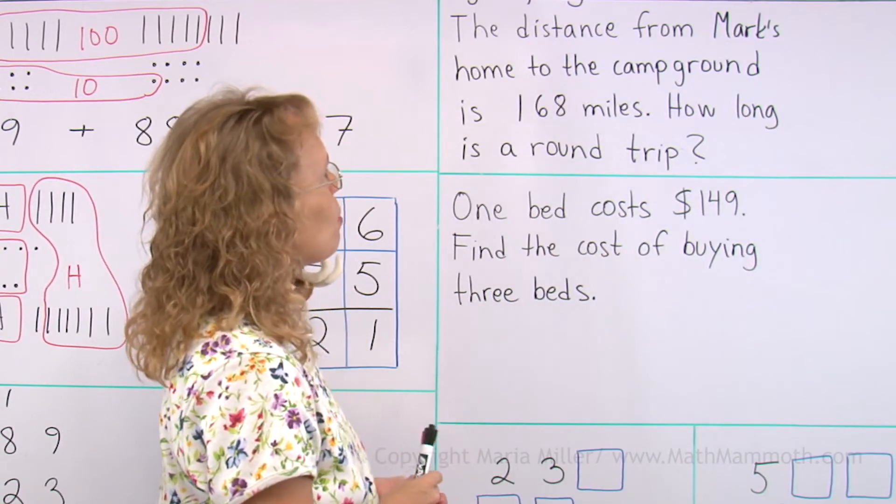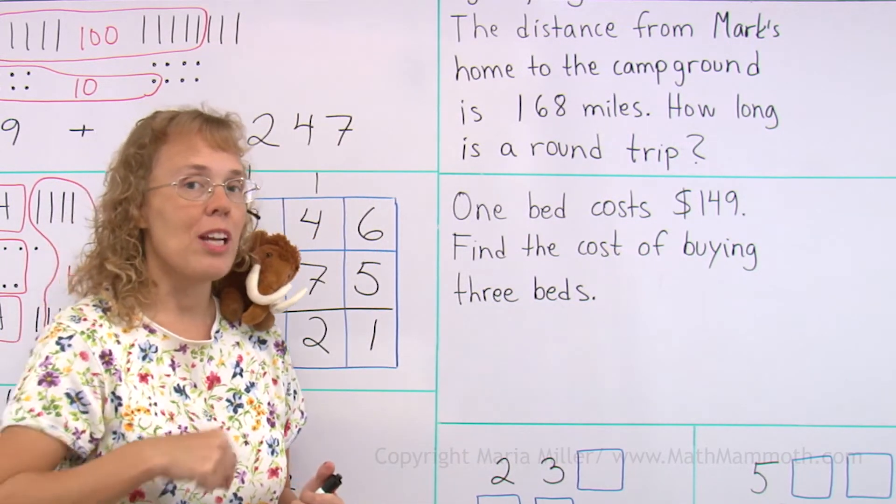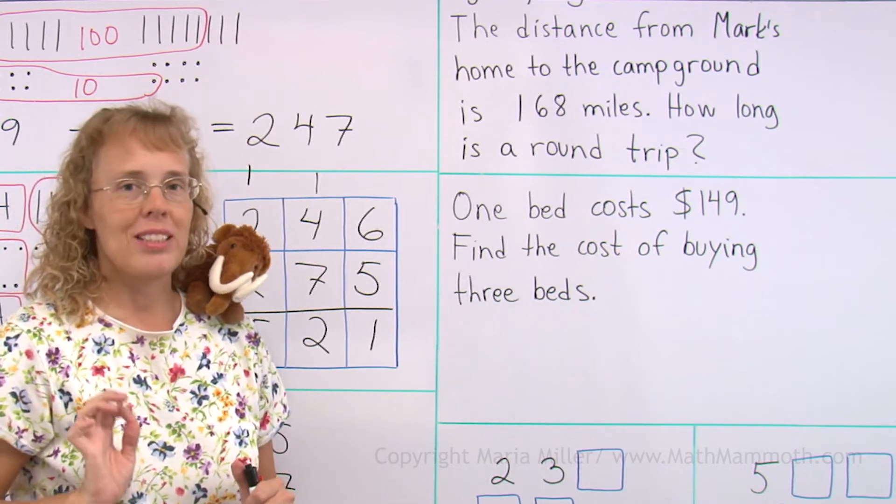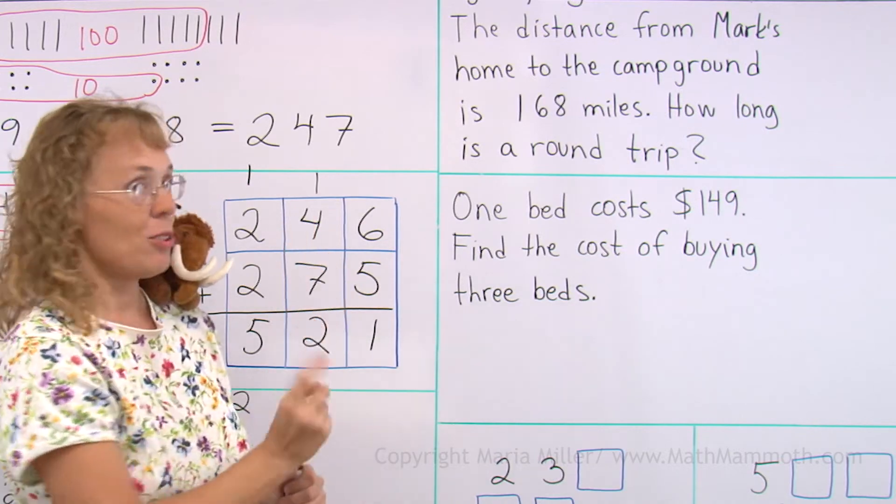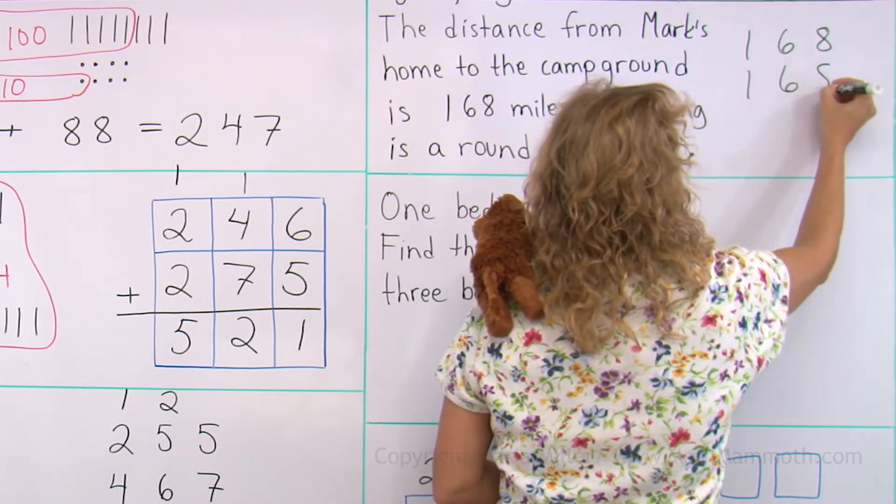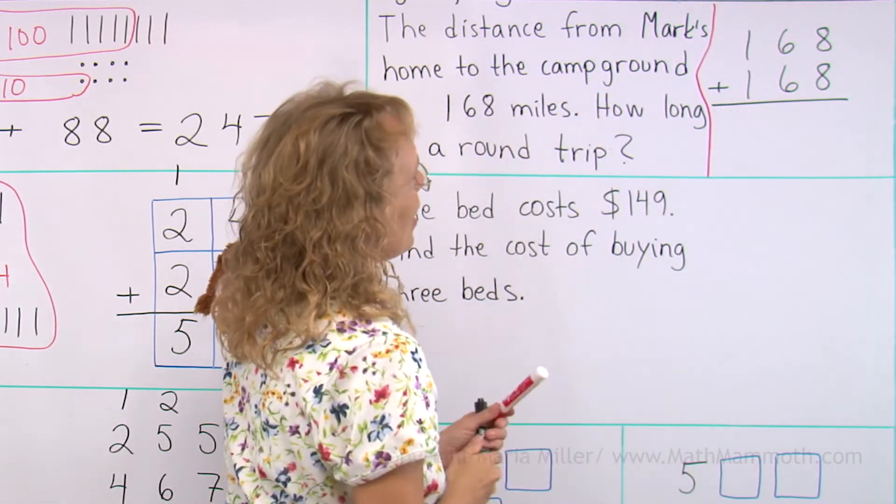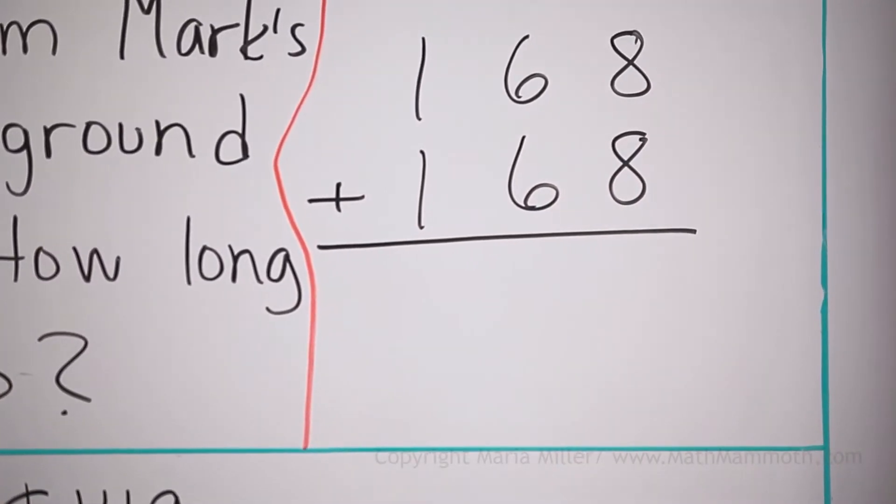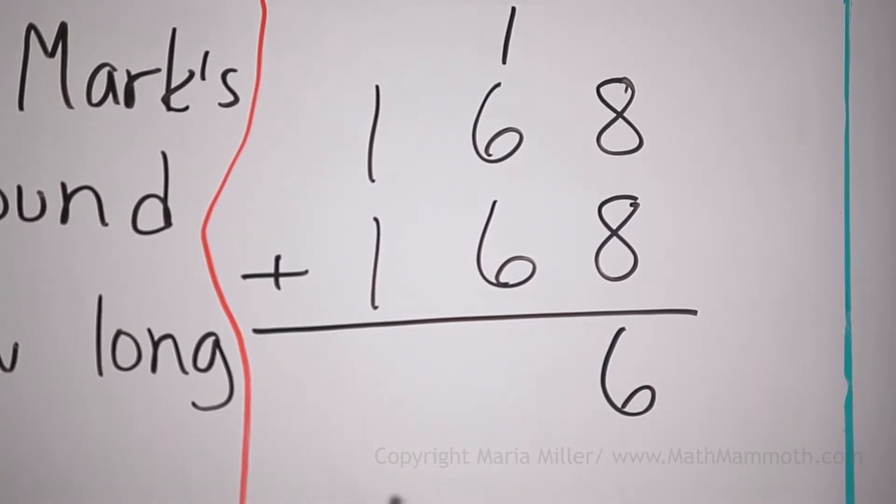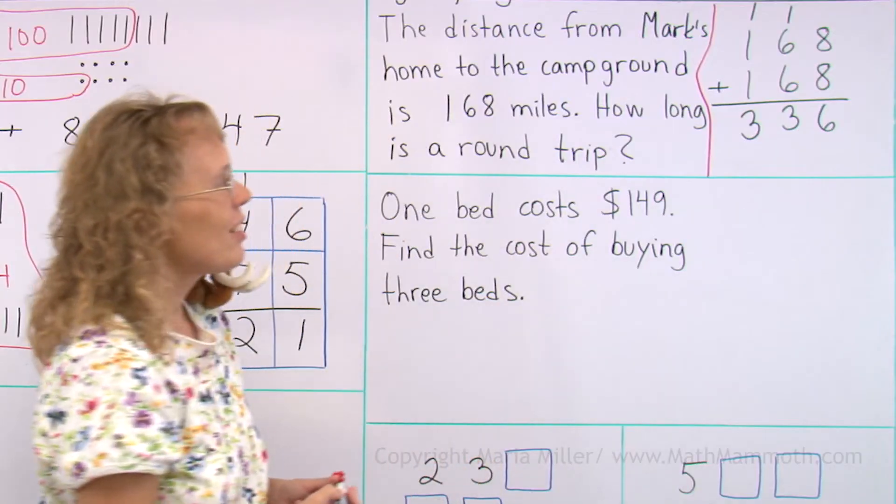The distance from Mark's home to the campground is 168 miles. How long is a round trip? If he travels from his home to the campground and then back home. Maybe he's a camp counselor and needs to travel there or something. Round trip means he goes there and comes back. So we need to add that number to itself. And I write 168 and I write it under 168 to add over here. I'm going to also draw here a line. Now add the ones. 8 plus 8 equals 16. So 1 and 6. Then in the 10s, 1 plus 6 plus 6. Oh, that's 12 and 1, so that's 13. 1 here, 3 here. And then in the 100s, we get 3. So the answer is 336 miles.